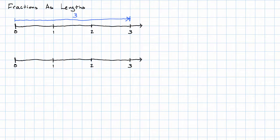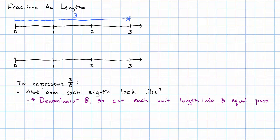How would we represent the length three eighths? We would need to start by figuring out what each eighth looks like. Well, we know that the denominator tells us how many pieces each unit, each whole thing, must be cut into. So, since the denominator is eight, we cut each unit length into eight equal parts.